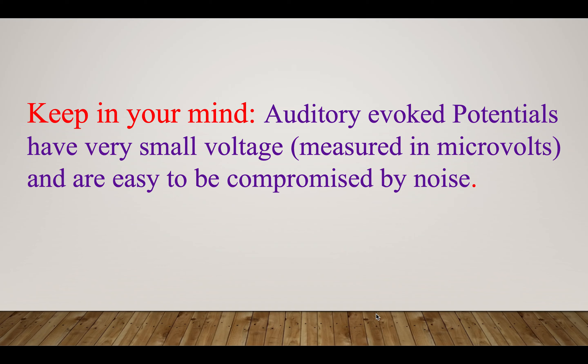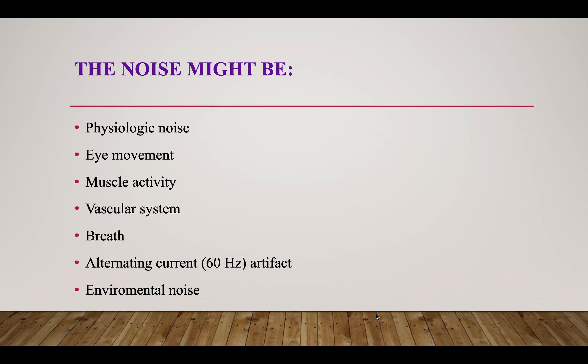Keep in mind that a derived potential has very small voltage — it is measured in microvolts and is easy to be compromised by noise. The noise might be physiological noise, eye movement, muscle activity, vascular spasm, vascular system activity, breath, alternating current 60 Hz artifact, and environmental noise.